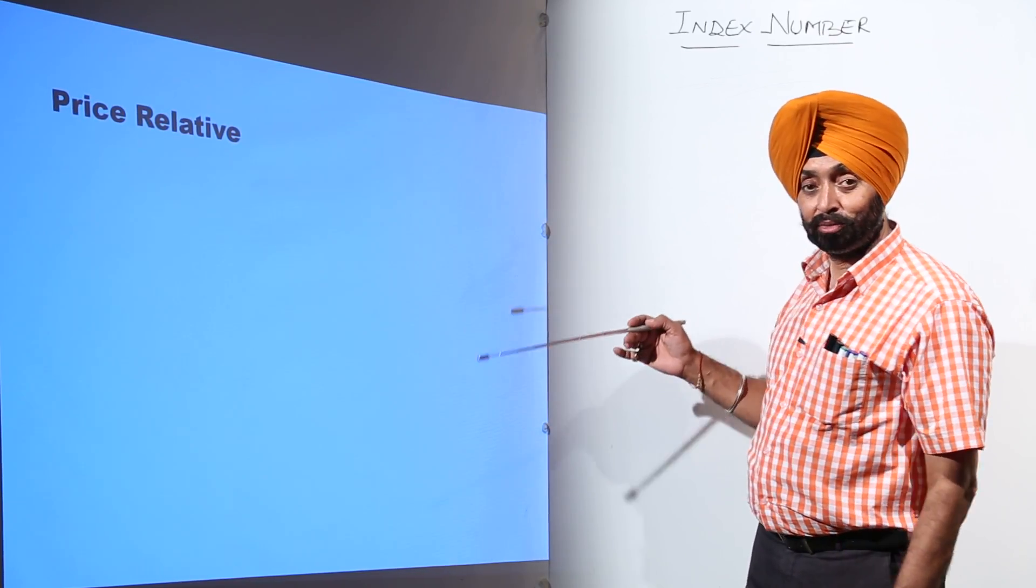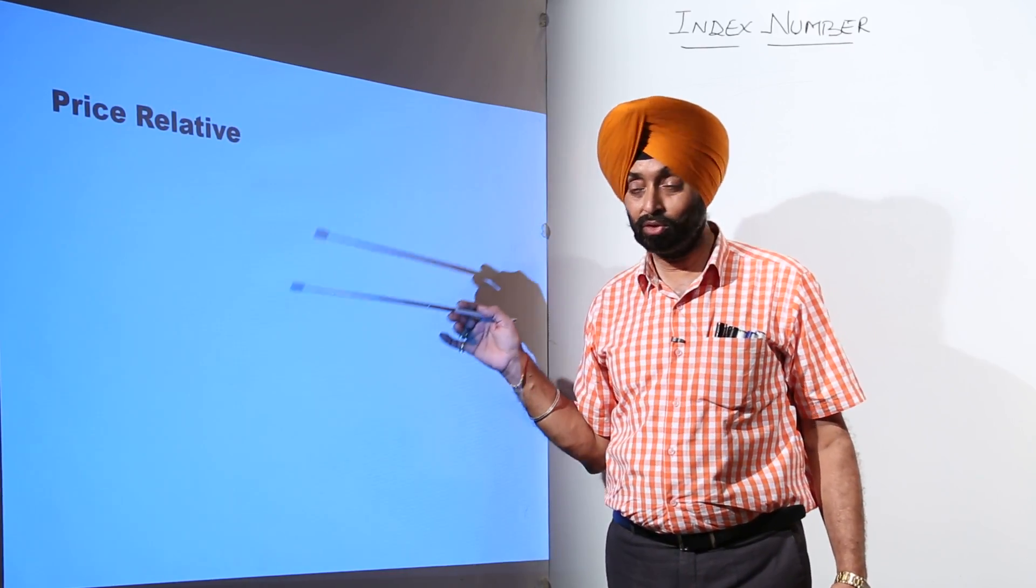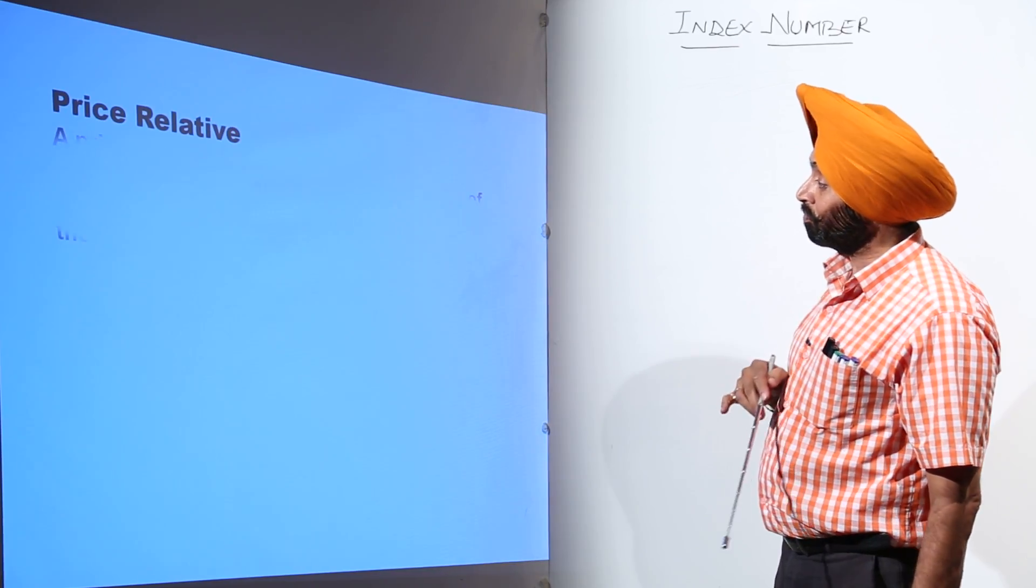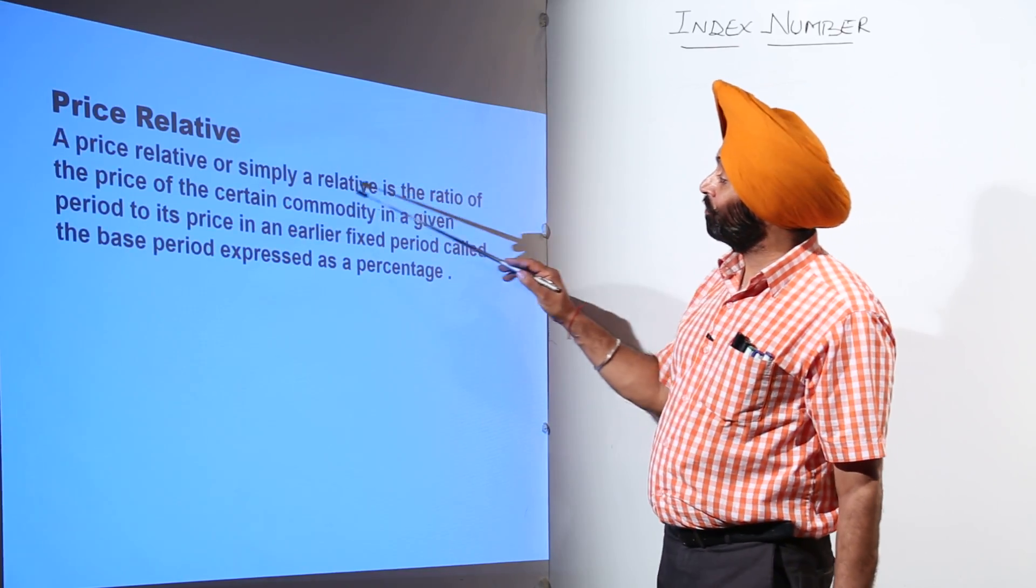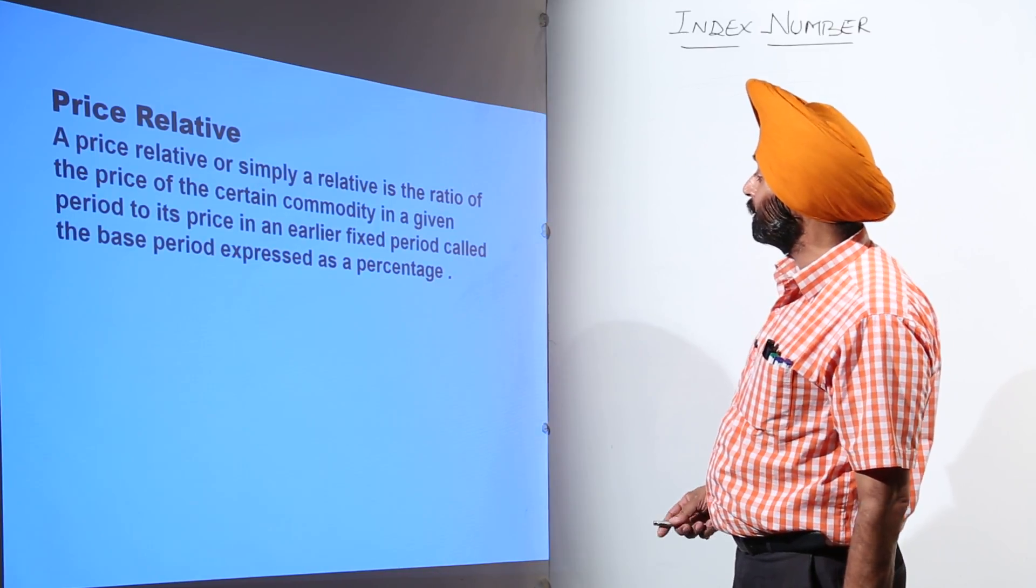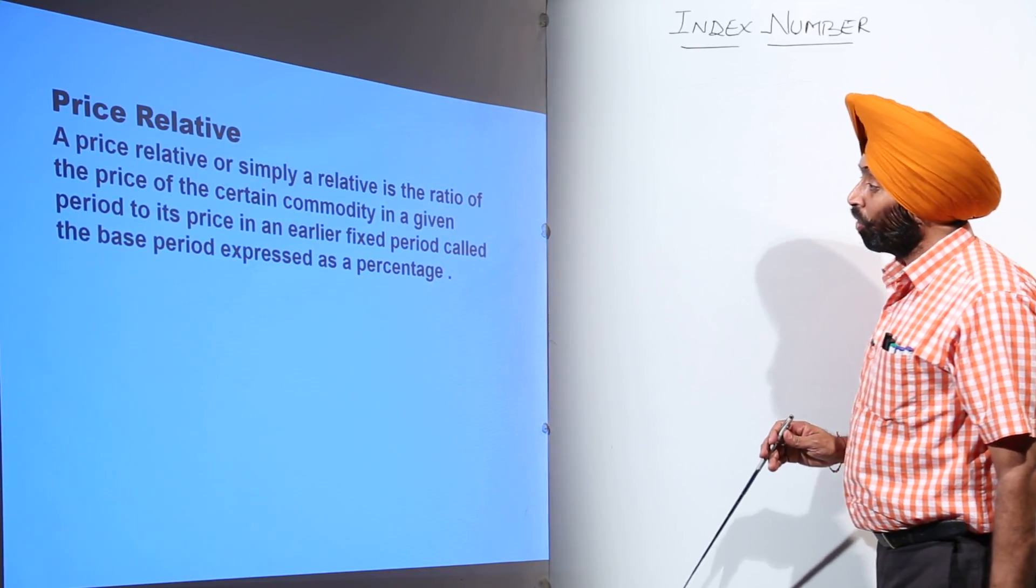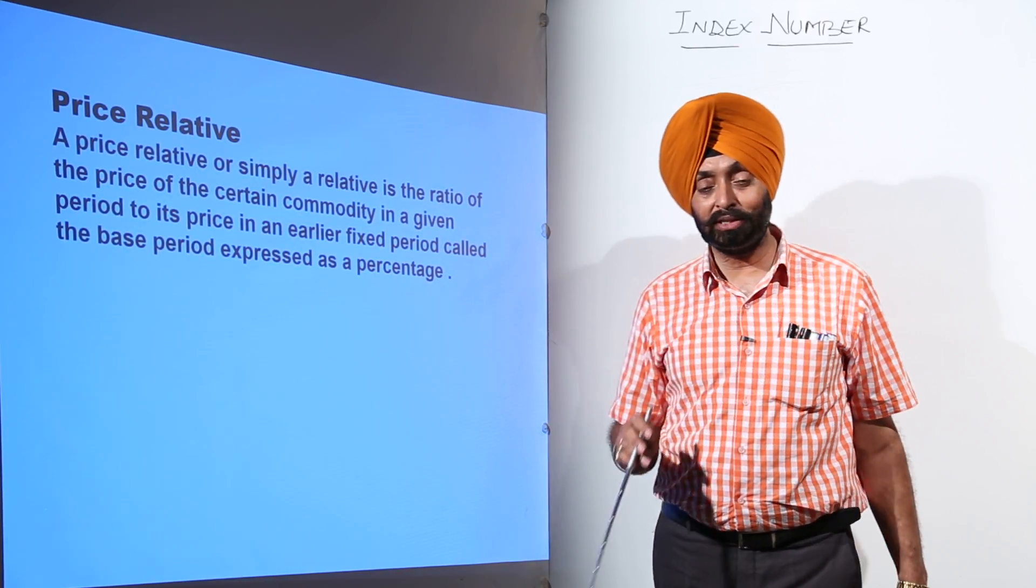For solving an index number, the basic formula we require is called a price relative. A price relative, or simply a relative, is the ratio of the price of a certain commodity in a given period to its price in an earlier fixed period called the base period, expressed as a percentage.